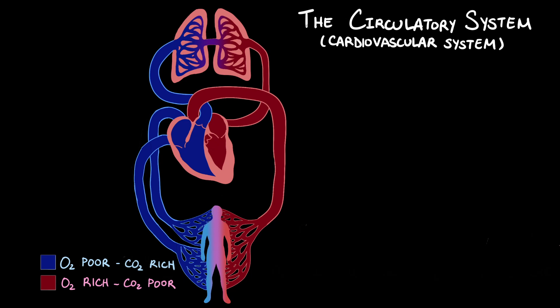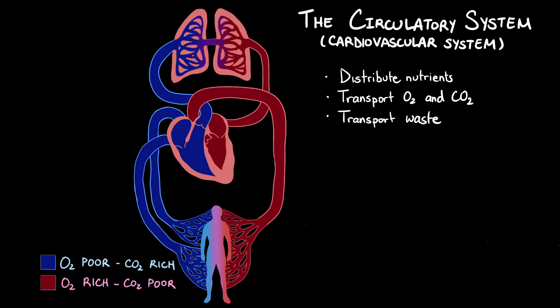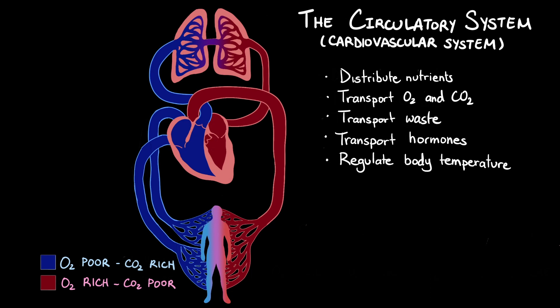More specifically, the circulatory system can distribute nutrients absorbed from the digestive tract, transport oxygen and carbon dioxide between the lungs and the rest of the body, transport waste products to the excretory system, transport hormones from the endocrine glands, and maintain body temperature.